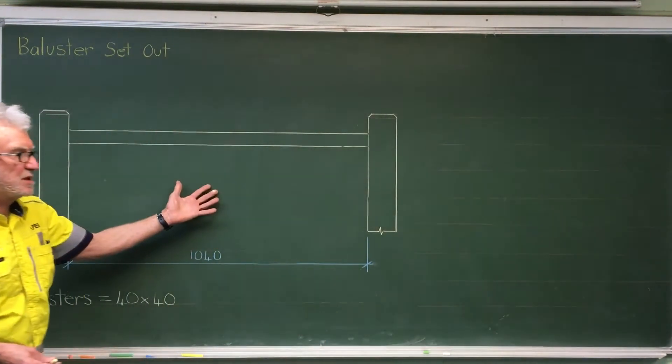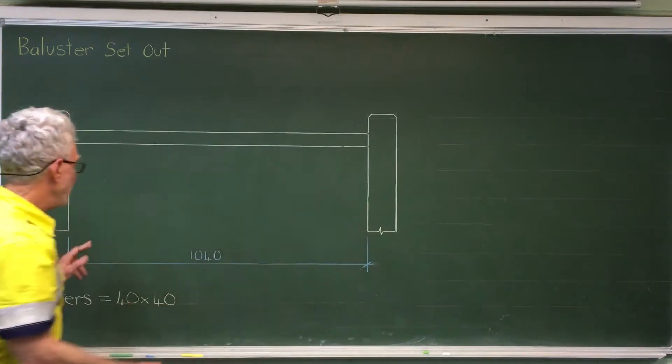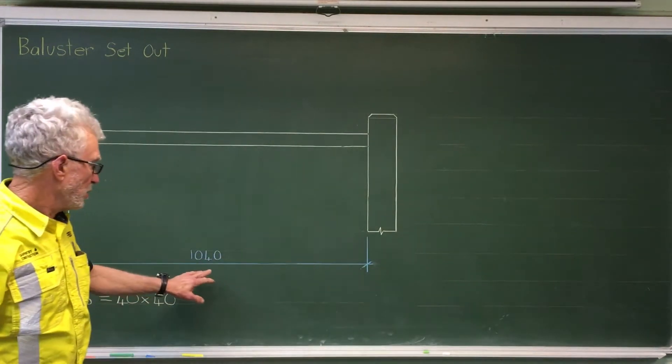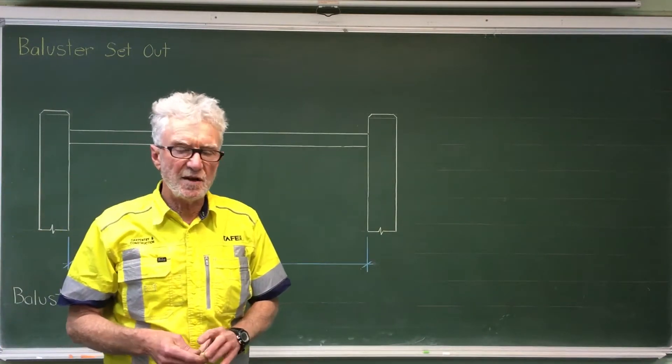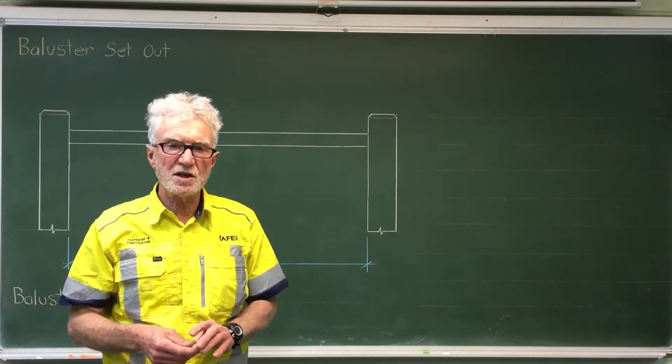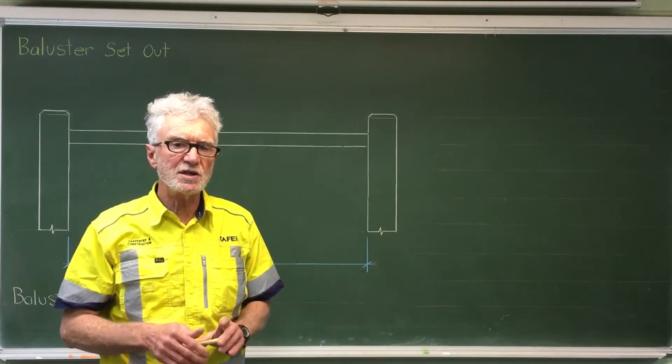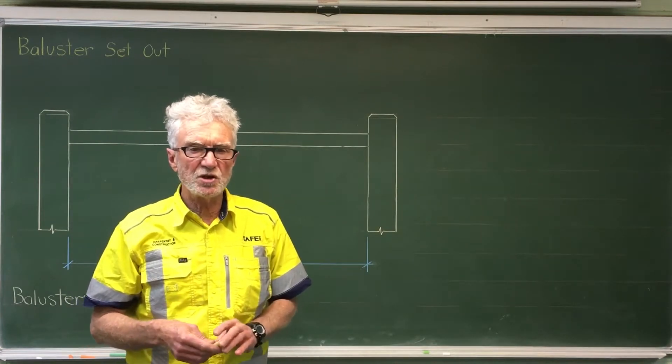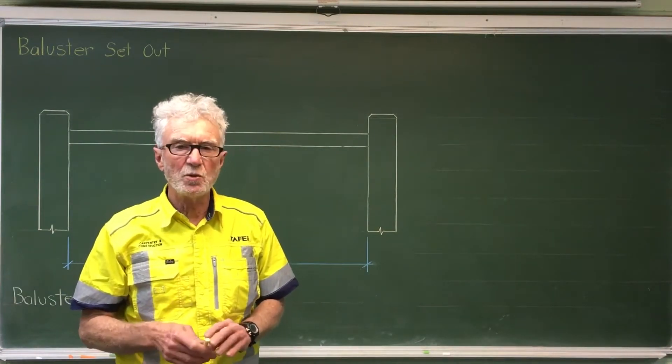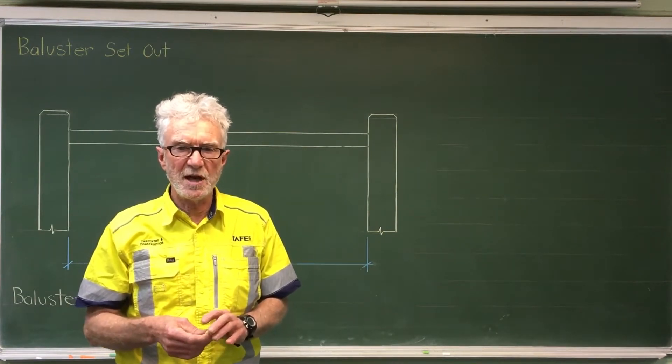For example this situation we have two newel posts and we measure the gap between the newel posts at 1040. If we could set out balusters across that distance we'll in the later calculations learn how to adjust that to the slope situation. So first what I'm going to show you is a system that doesn't work but which is the most common mistake people make when they're trying to set out balusters.